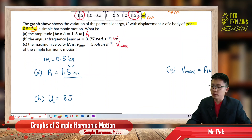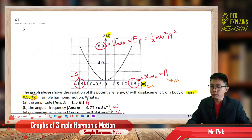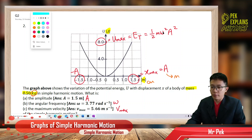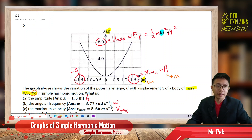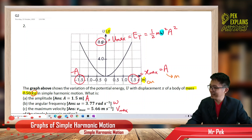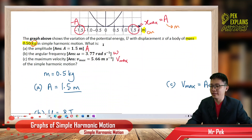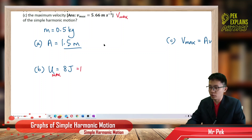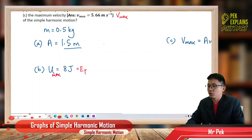Now, what's the angular frequency omega? Omega is hiding inside the maximum potential energy. We need the 8 Joules value. The maximum potential energy U_max equals 8 Joules, which equals the total energy.